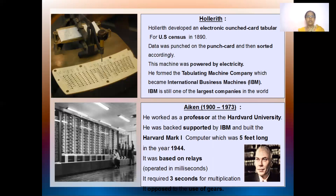This was doing all the calculations. It was based on a system called relay — based on relay. The operations that were done were so fast that in milliseconds you got the results, and to do any multiplications and all, it just took three seconds to do the multiplication. That's how it developed. Aiken developed the Harvard Mark 1 computer.